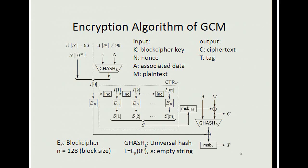We first compute the initial counter value for counter mode, which is N concatenated with a constant when the nonce length is 96 bits; otherwise we use the GHASH function to obtain this initial counter value. GHASH is a universal hash function and H is a key which is the encryption of zero bits. We use counter mode to generate a keystream, XOR'd with the plaintext to obtain the ciphertext, then compute the GHASH value for A and C and XOR those two values to obtain the tag.